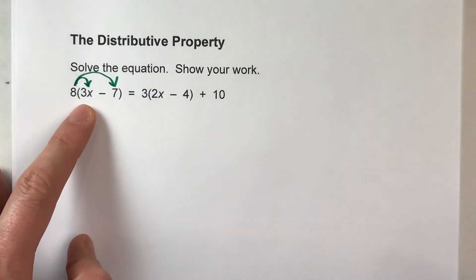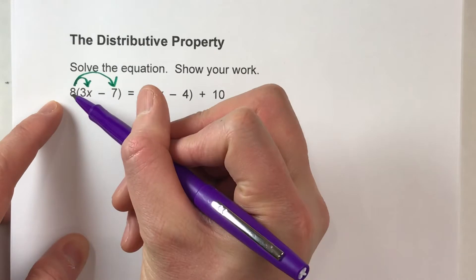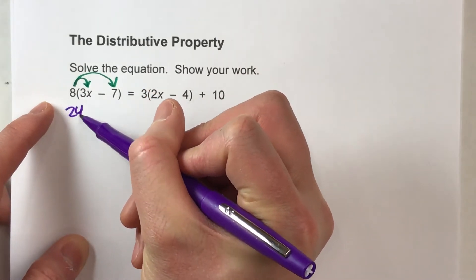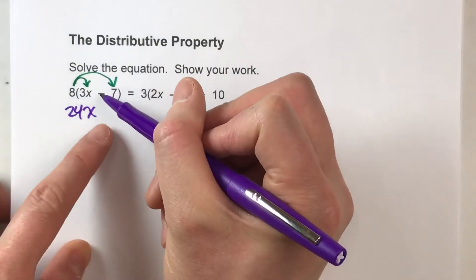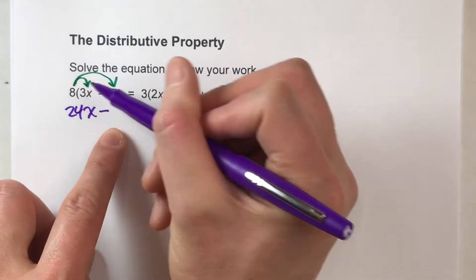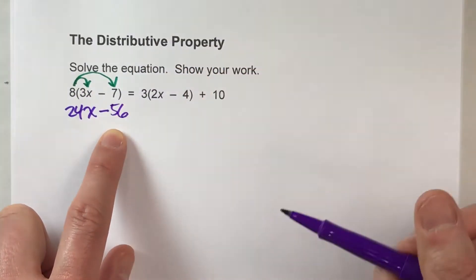So we have to do 8 times 3x. 8 times 3 is 24, so 8 times 3x is 24x minus 8 times 7, which is 56.